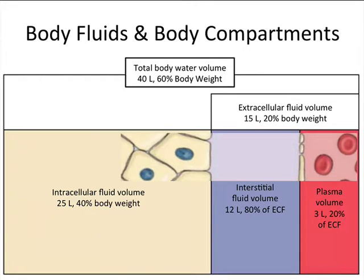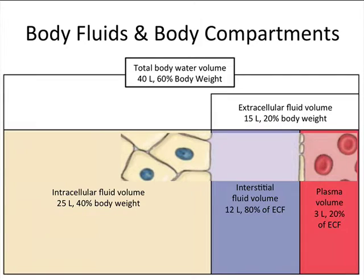No — you do not have 40 liters of blood. You only have about three liters of plasma at any one time, which is about 20% of extracellular fluid. The interstitial fluid surrounding your cells is much larger — approximately 12 liters, or 80% of the extracellular fluid, which itself is only 20% of body weight at 15 liters. The majority of the fluid in your body is inside the cells themselves — 25 liters, or 40% of body weight.